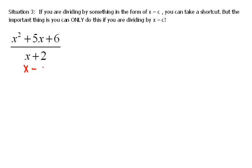In order for this to be in the form of x minus c, it would have to be x minus some number. Well, what number would go in here so that it would simplify into x plus 2? That would be negative 2.